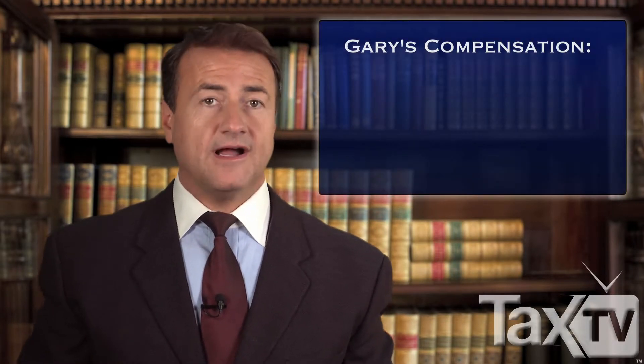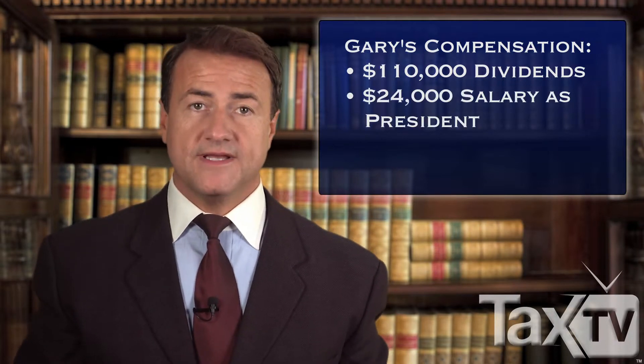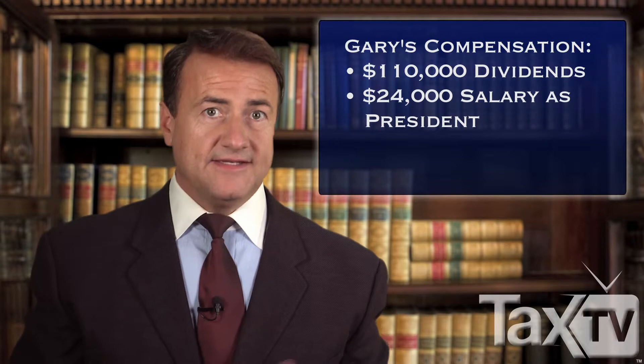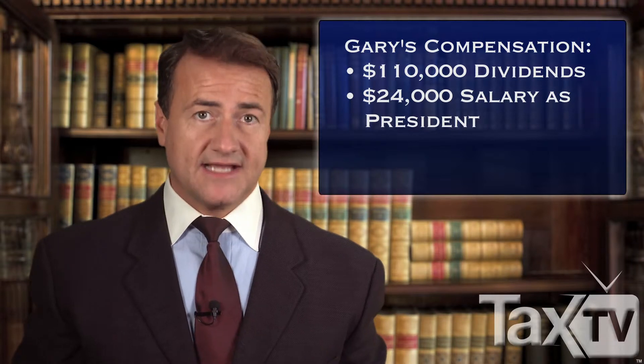Let's take a look at an example. Gary is the sole shareholder for Gary Corporation, a properly elected S-Corporation. He also serves as the company's president. Gary has served in executive positions with other large corporations and even has an MBA. Gary Corporation had a yearly revenue of $2 million and issued a dividend to Gary for the amount of $110,000. Gary's paid a salary of $24,000 for his position as president. The dividend and the salary are Gary's only sources of income, and Gary is a single taxpayer.